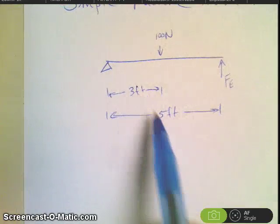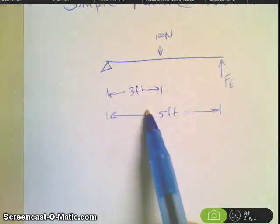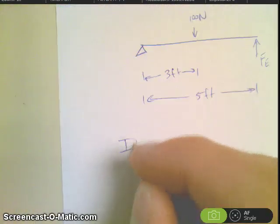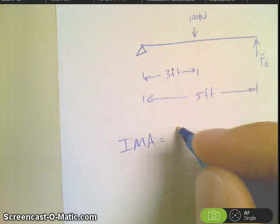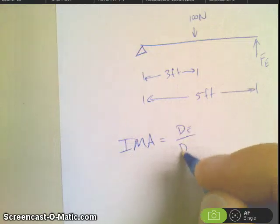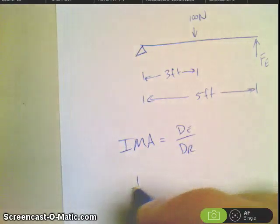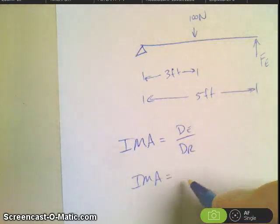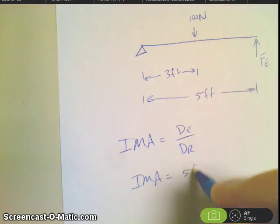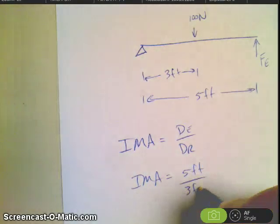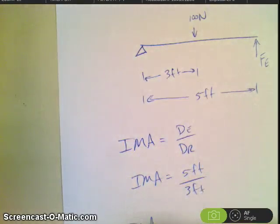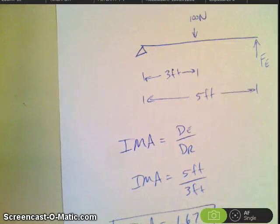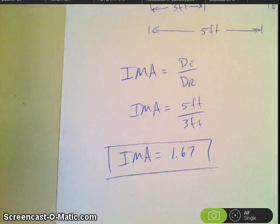So what we can do is we can actually calculate the ideal mechanical advantage, and that's effort distance over resistance distance. So we've got five feet over three feet. Pretty straightforward.